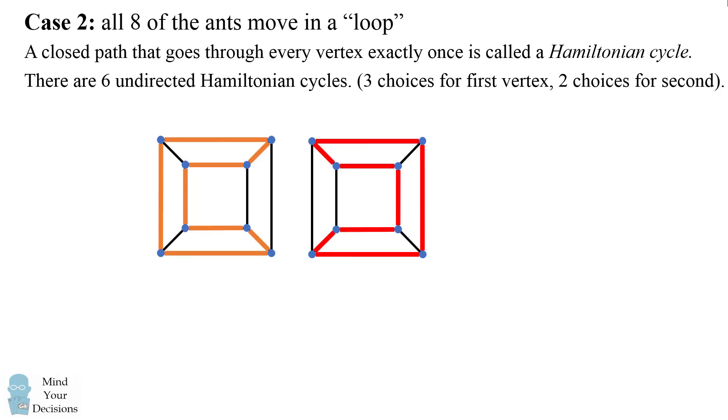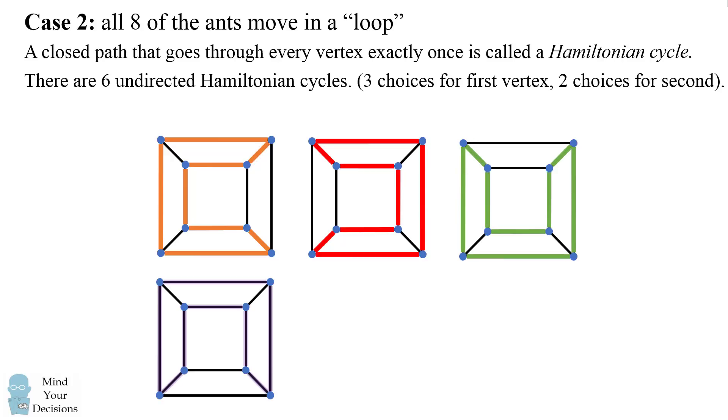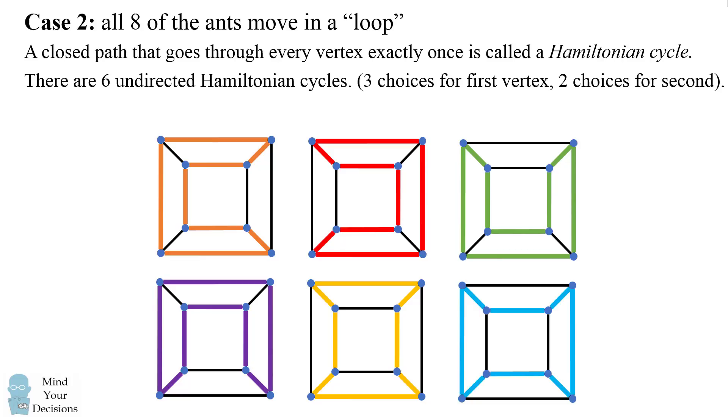Now let me go ahead and illustrate all of the other ones as well. Now this front face involves three different edges that are going through this loop, but you could also have the front face have exactly two of its edges involved in a loop. So here are the remaining Hamiltonian cycles. So these are six undirected Hamiltonian cycles.